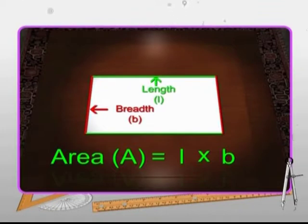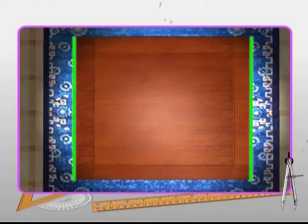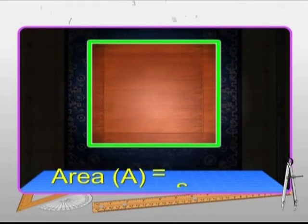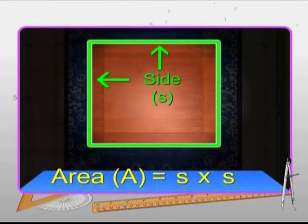The area of a square can be calculated by multiplying the length of any two sides as all its sides are equal. The formula to find the area of a square is A equals S multiplied by S, where A stands for area and S stands for the side.